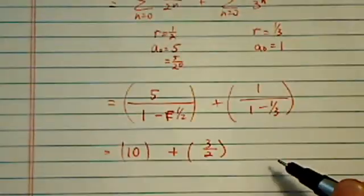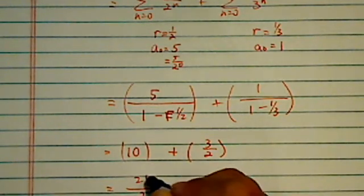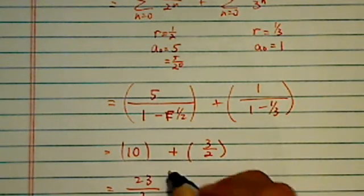2 on the bottom, because it's 1 over. And then from here, it's 23 over 2, which is our closed form.